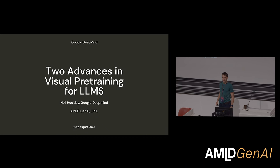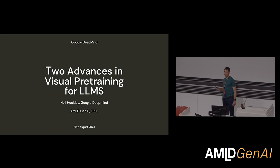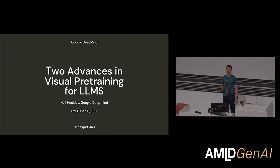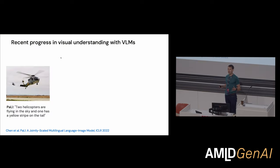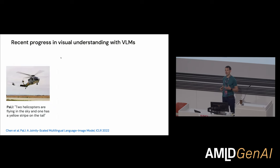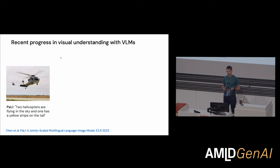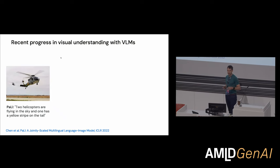So I'm going to talk about two things we've been working on with respect to visual pre-training, in particular for usage with LLMs. For motivation, there's been a lot of progress with augmenting language models with vision. Here's a few results from some work we did with our colleagues in the States. This is the Pali model, and it can do things like captioning and VQA.